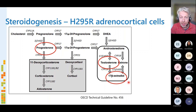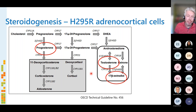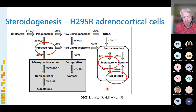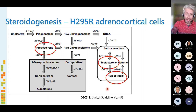We can expose these cells to our test compounds, and we have a particular interest in whether they interfere with the production of estradiol — 17-beta estradiol, the female hormone — testosterone, the male hormone, and also progesterone, which is also called the pregnancy hormone and is a very important intermediate in the pathways leading to testosterone and estradiol production. We do this with the LC method, and we are currently in the process of making these measurements.